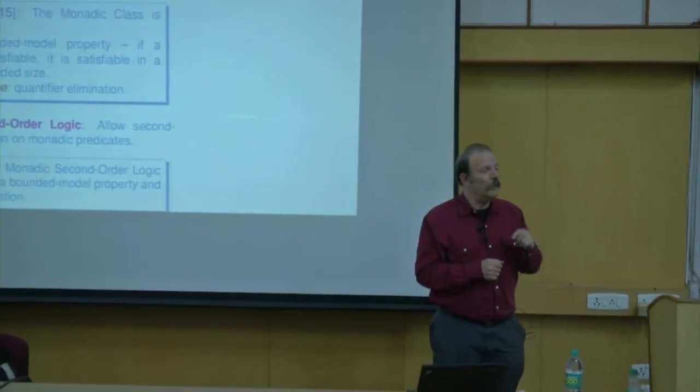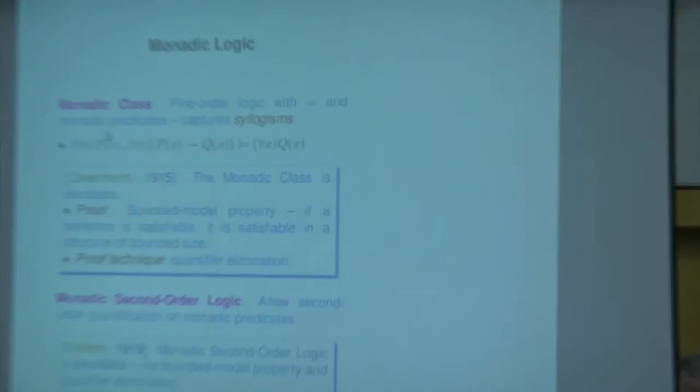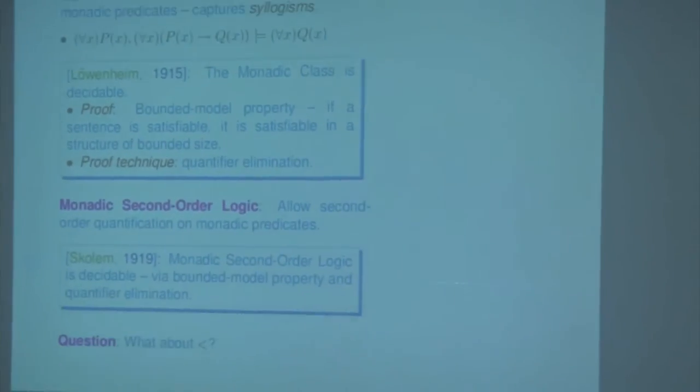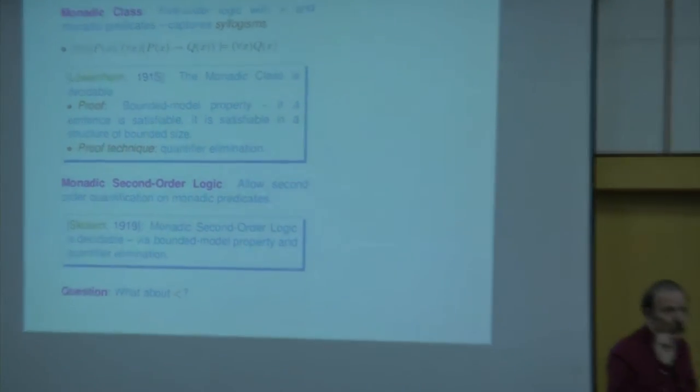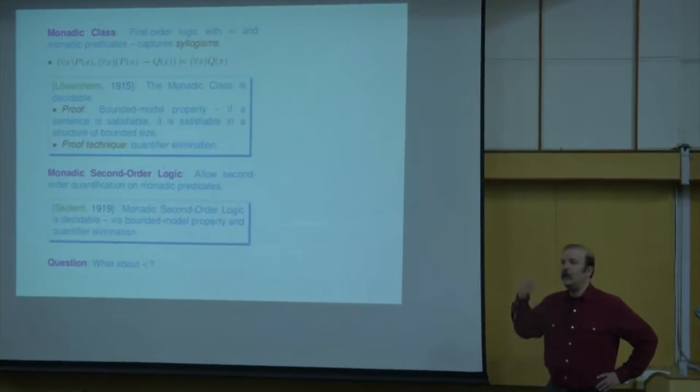You prove a bounded model property: given a sentence, if it is satisfiable, there is a model that cannot be too large. Therefore, you can systematically search for such a model, and for this you use quantifier elimination — you eliminate quantifiers and reduce it essentially to propositional logic. A few years later, Skolem proved that this even works for second-order monadic logic, where you can quantify additionally over predicates. They allow, as I said, one binary predicate which is equality, and you could ask what happens if you add inequalities.